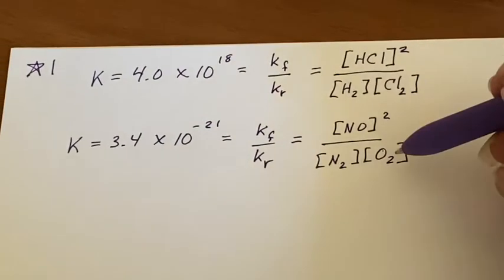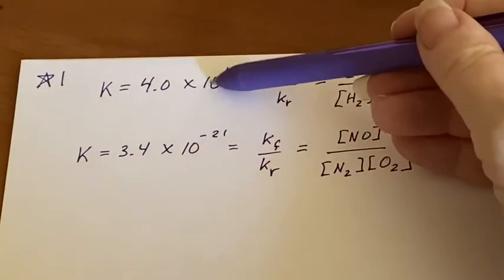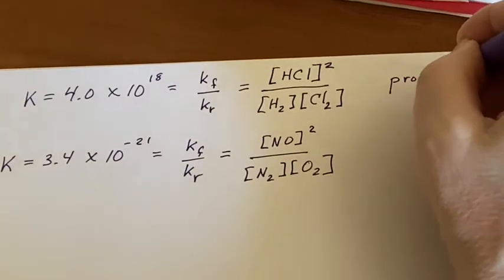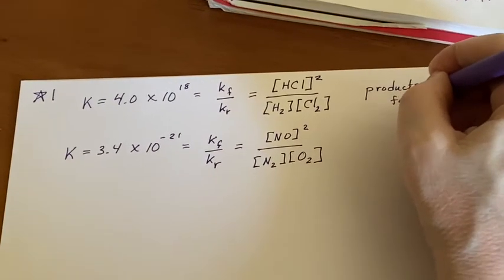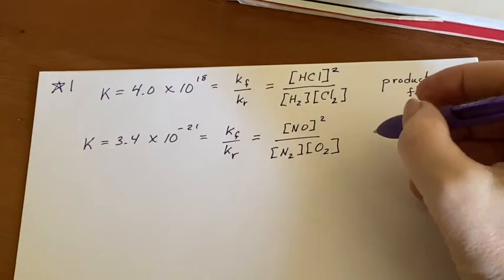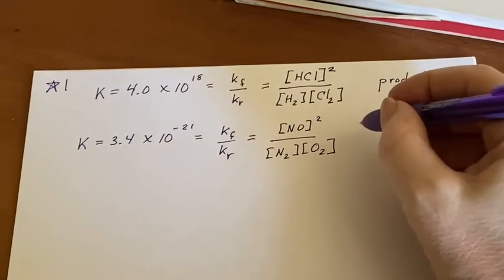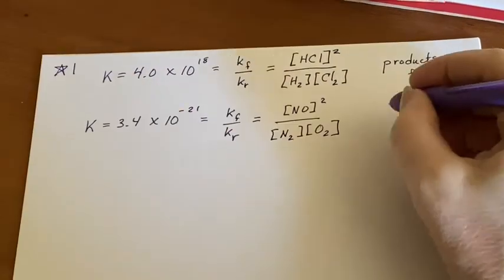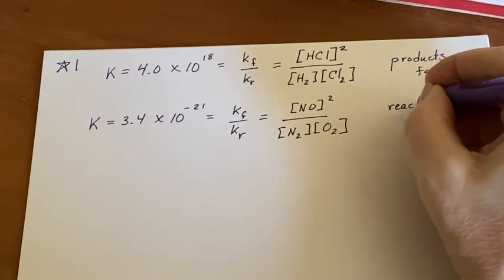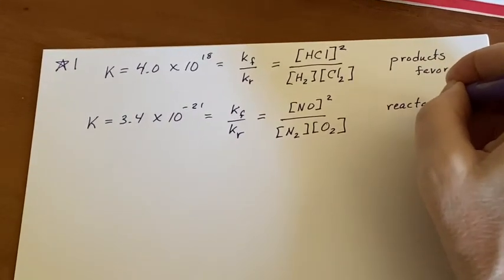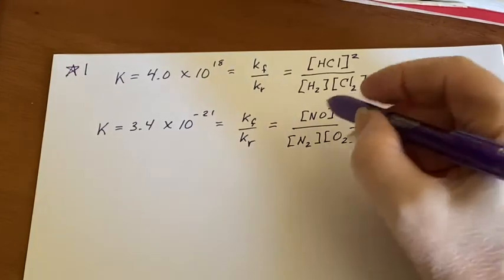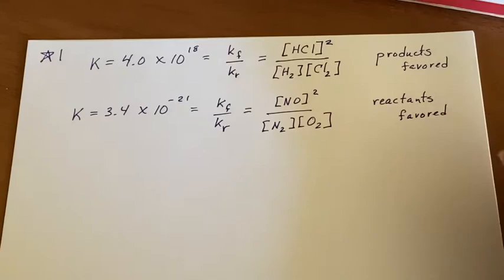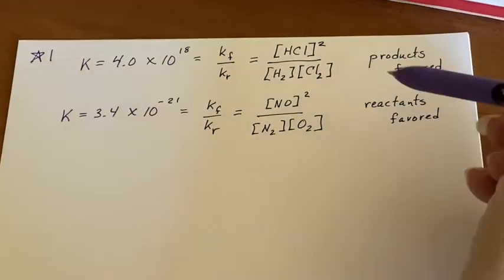So we have two different things. When we see a big K like this, we know that products are favored. We're going to end up with lots of products and use up almost all of the reactants. On the other hand, here we have one where the Kf is going to be much, much smaller than the Kr, and that means that the reactants are favored. We hardly ever encounter spontaneously created nitrogen monoxide because the rate of reaction just isn't in its favor.